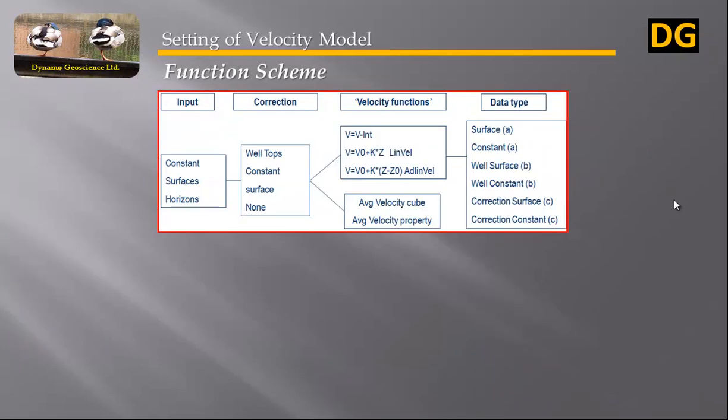Now, linear velocity functions available. Number one: linvel where v equals v_node plus k times z. Number two: add linvel where v equals v_node plus k times (z minus z_node).